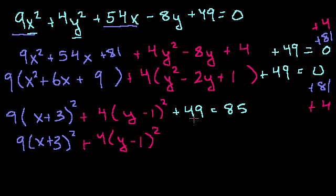So now we have 9(x + 3)² + 4(y - 1)². And let's subtract 49 from both sides. That is equal to, if I subtract 50 from 85, I get 35. So if I subtract 49, I get 36.